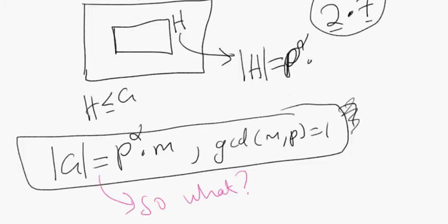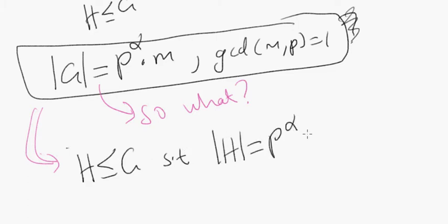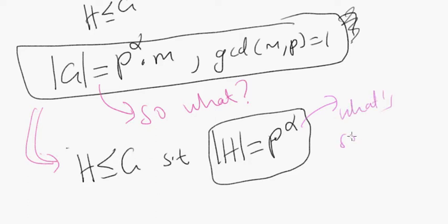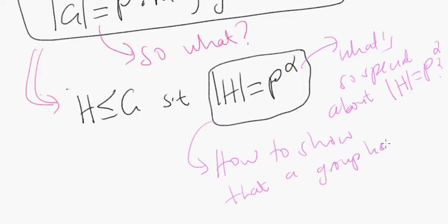Another question: from this information, we're somehow supposed to conclude that there's actually some subgroup H of G such that the order of H equals p to the alpha. A couple more questions arise. What's so special about having a subgroup of order p to the alpha? And how do we show that a group has a certain order — how do we show that a group has a given order?